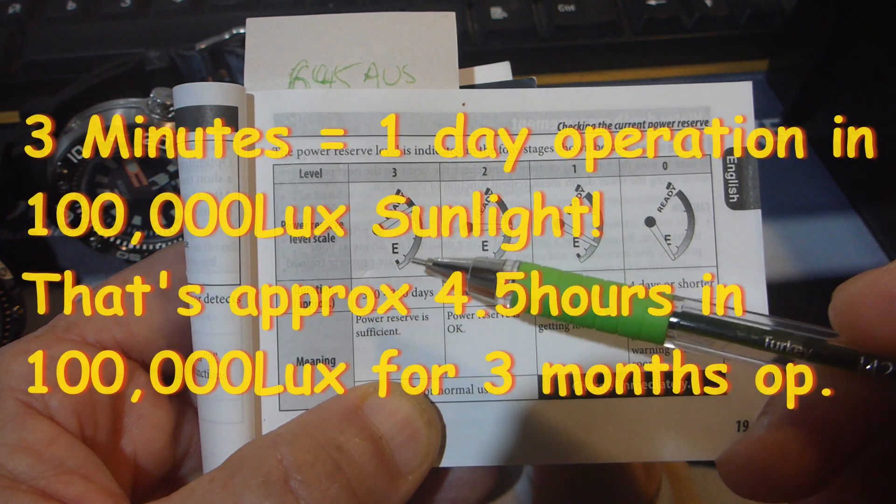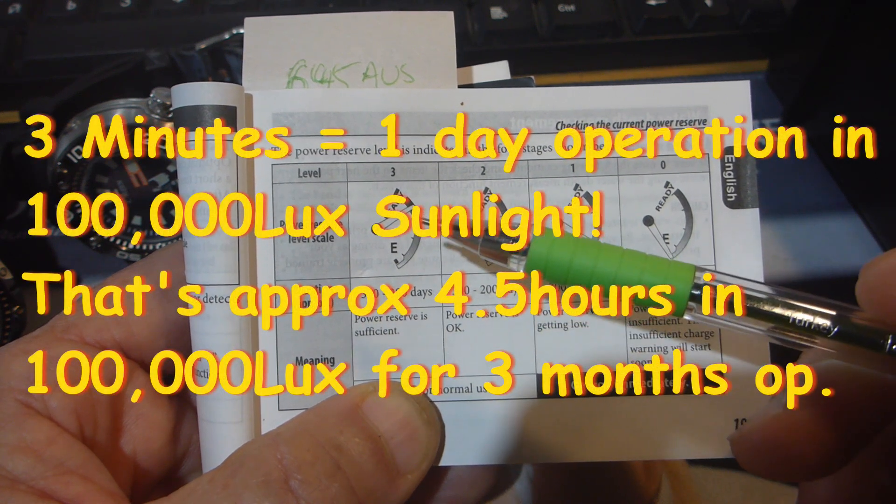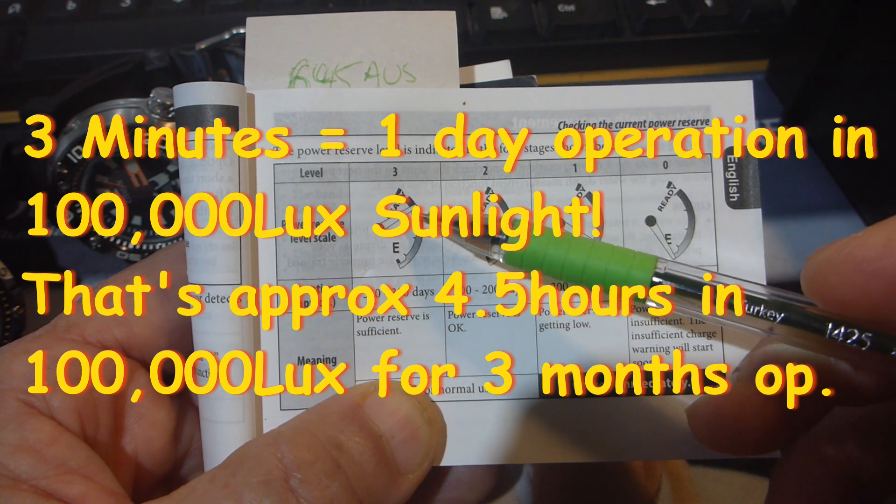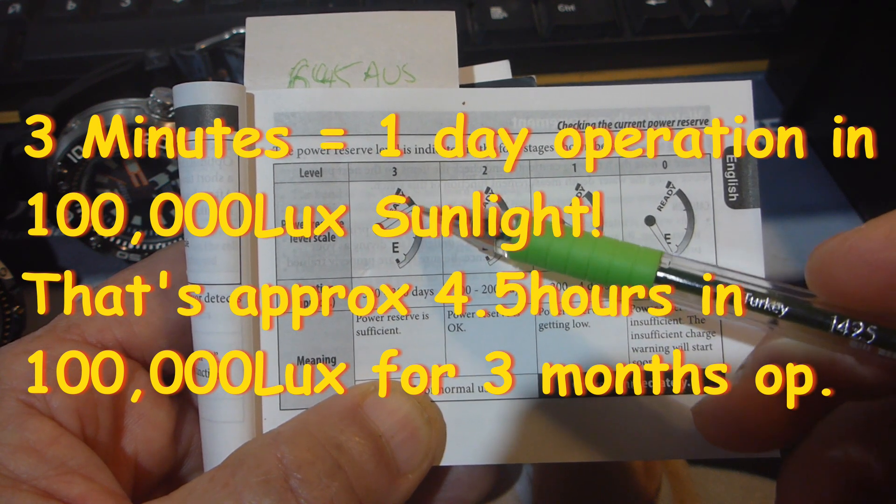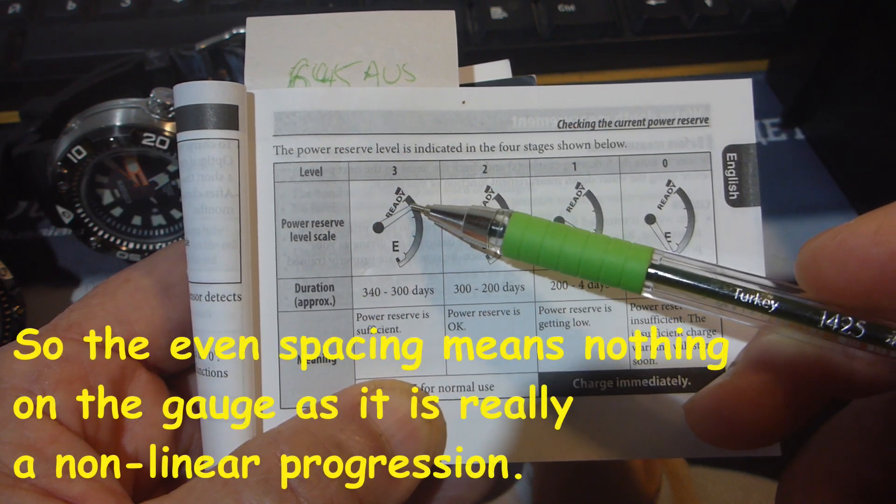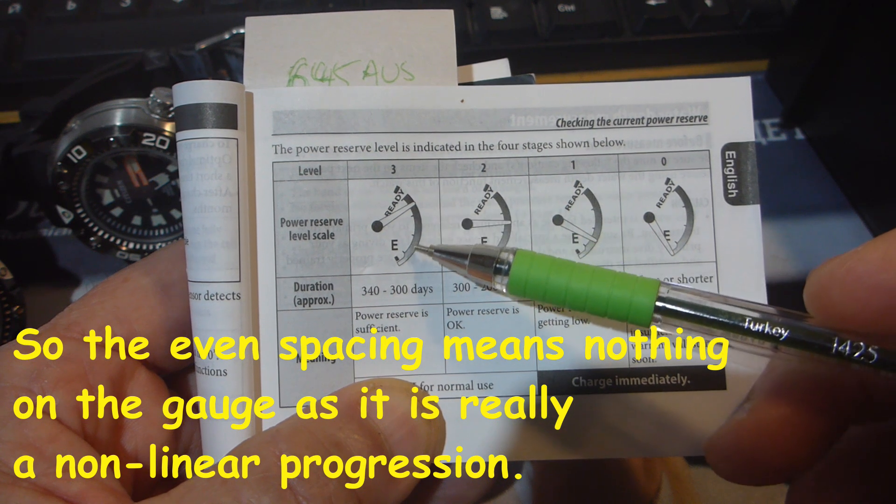And that should take you all the way from one of these marks to the top, but it doesn't. Why doesn't it do that? You would expect that this is four months, the next four months, and the final four months to make the entire year.